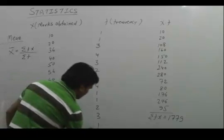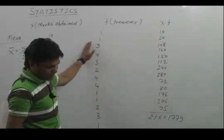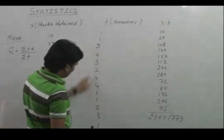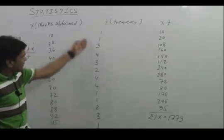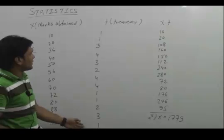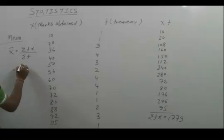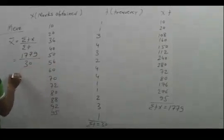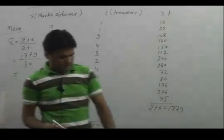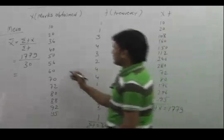Sigma Fx can be found from here. Sigma F is the total number of students in the class. If we add them together, 30. So there are total 30 students in the class. In that case, our arithmetic mean would be Sigma Fx, 1779 divided by 30. That comes to 59.3.